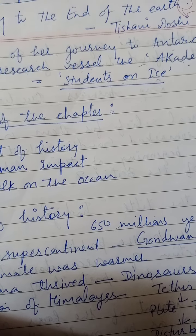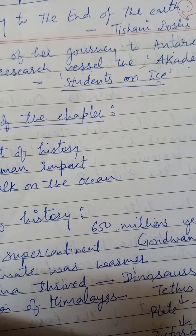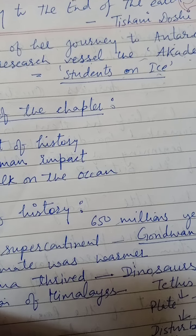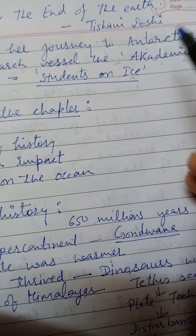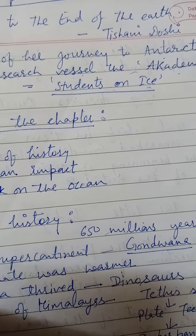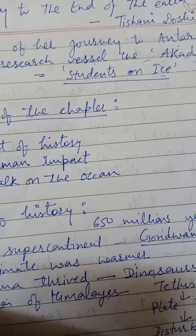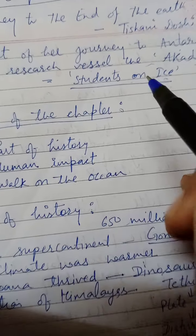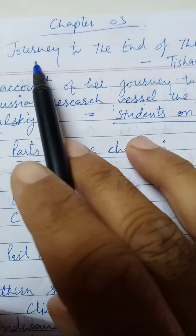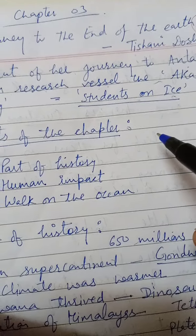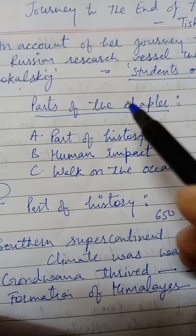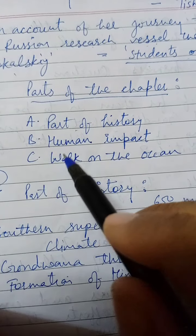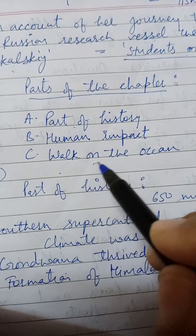We will look at the history behind Antarctica — how this particular place became the coldest place in the world, even though earlier it had been a warm place. We will study what things caused that change. This chapter contains three different parts: the first is 'Part of History,' the second is 'Human Impact,' and the third is 'Walk on the Ocean.'